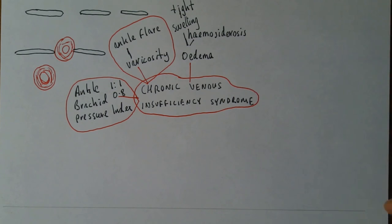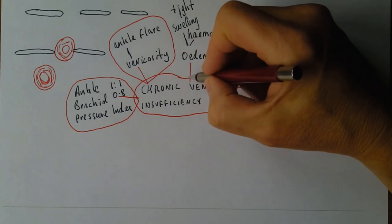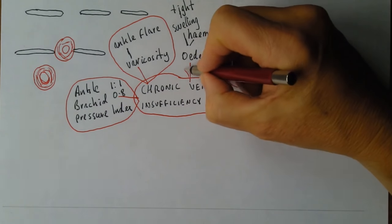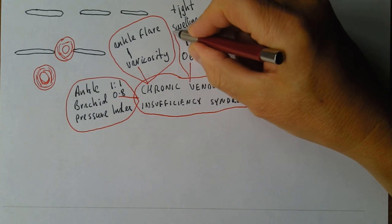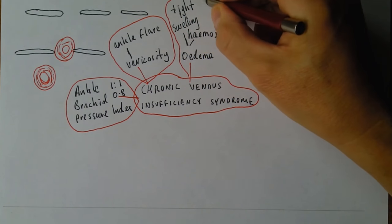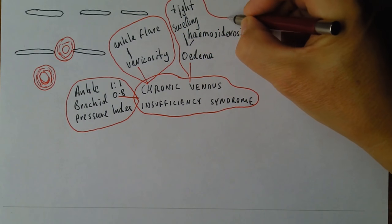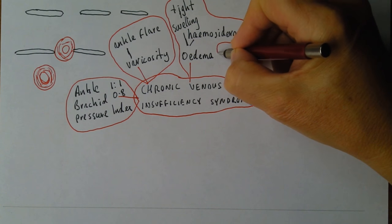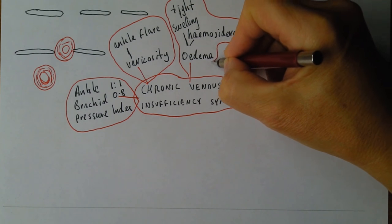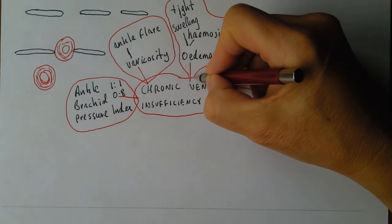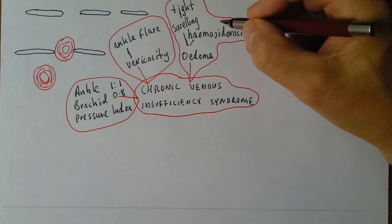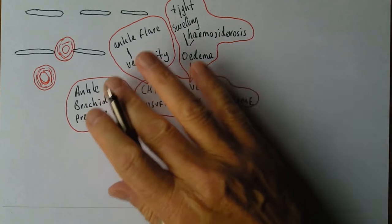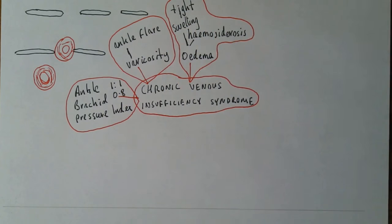These features — oedema and haemosiderosis — are grouped together because they relate to the increased permeability of the capillaries. If you can work out what's causing each feature it starts to make sense rather than just learning lists.